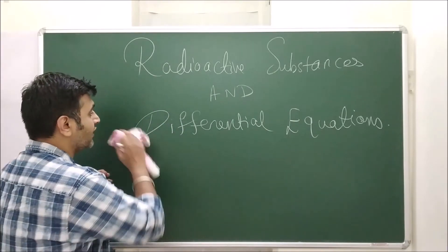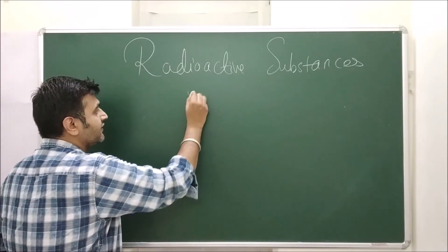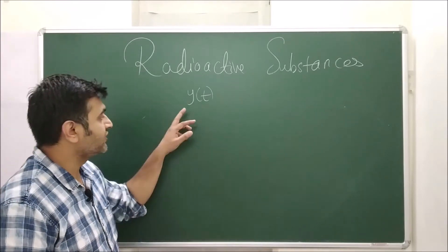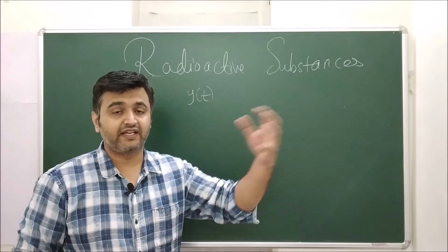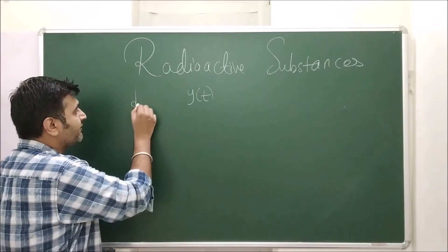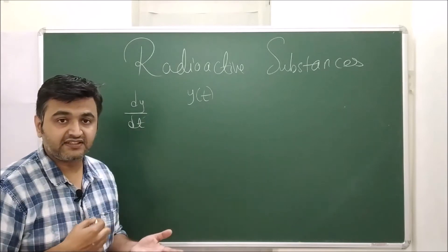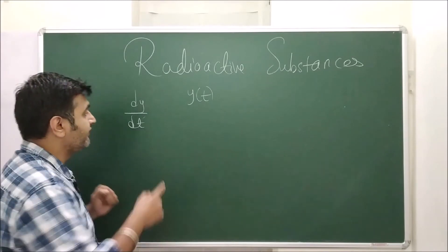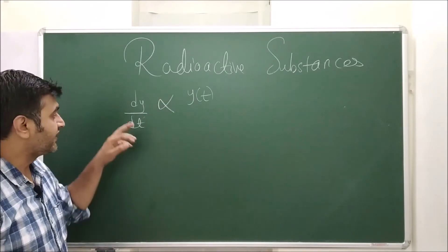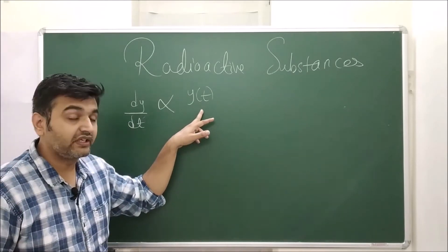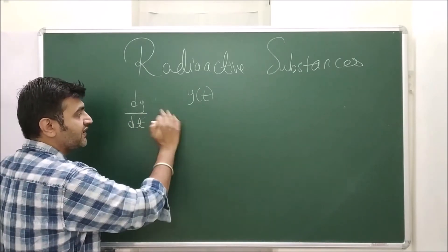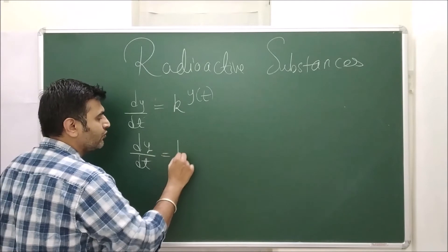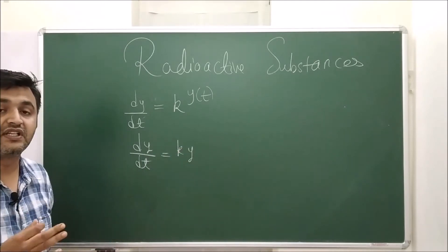Now how exponential is coming into picture? Suppose y(t), the amount of substance present at given time t. Then dy/dt is the rate at which the amount of substance is changing over the given time. We know that this is proportional to the given amount. When I remove the proportionality sign, I have dy/dt = ky, where k is the proportionality constant.